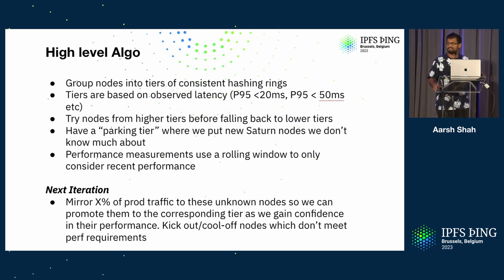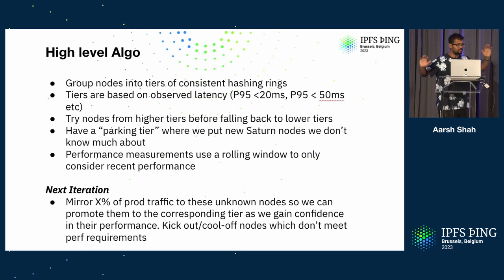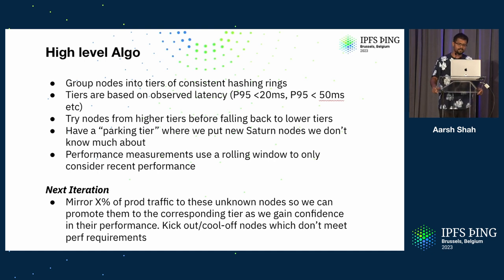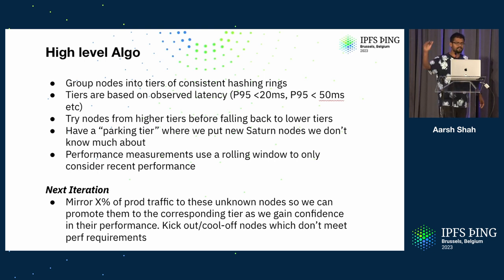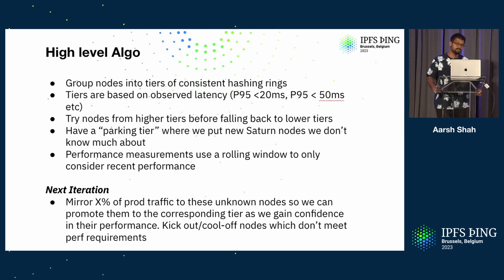I'm giving a high-level overview of what we have today and showing some numbers on how it's going. The way it works today is we group nodes into different tiers — each tier is its own consistent hashing ring. Imagine tier one, tier two, tier three of nodes, where each tier is a consistent hashing ring. We define tiers based on observed latency: one tier is P95 less than 20ms, another is P95 less than 50ms, etc. We always try nodes from higher tiers before falling back to lower tiers.